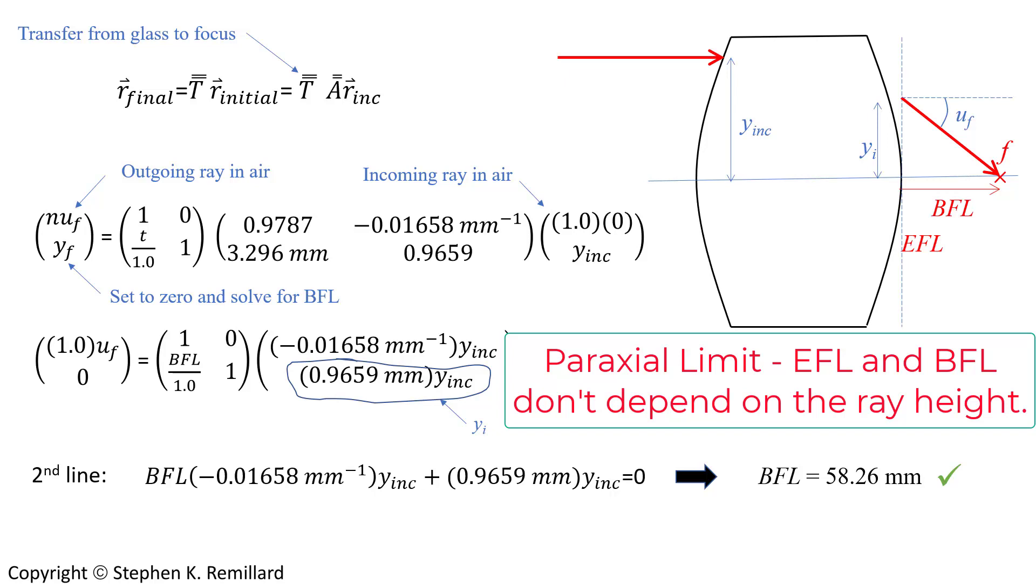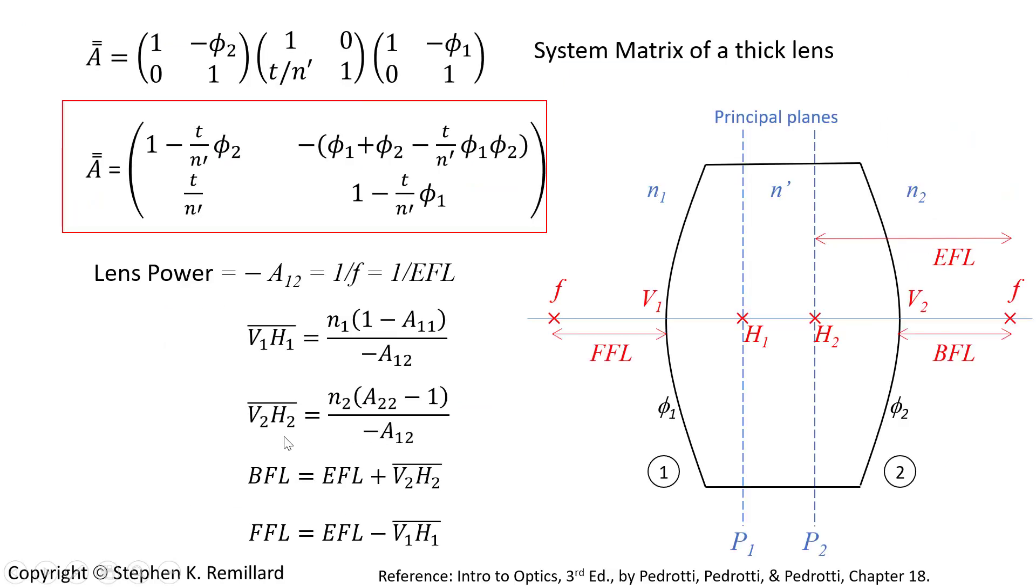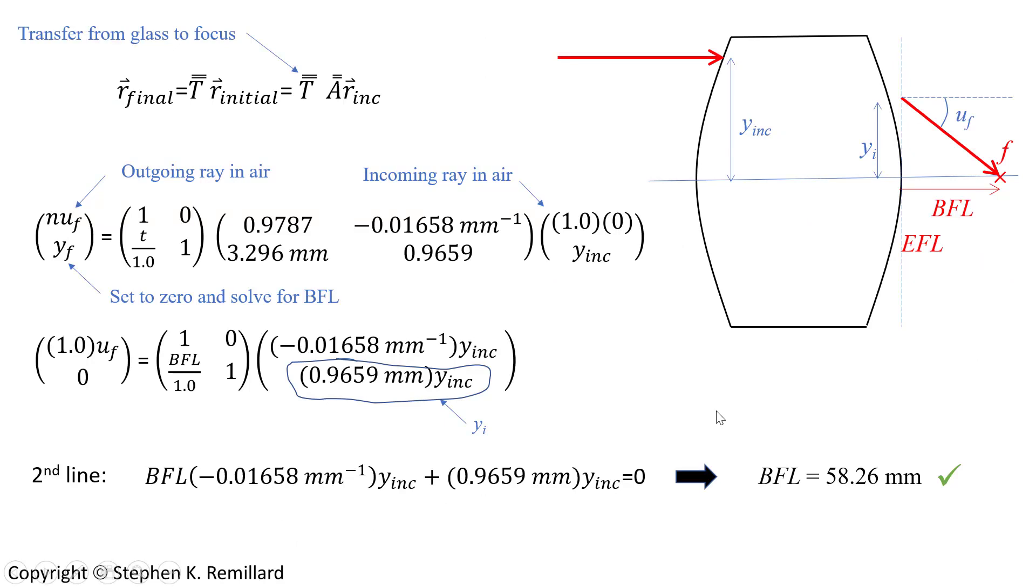And so we solve for it, and we get back focal length of the same thing, 58.26, maybe a little rounding error there. Through self-consistency, we've confirmed that this expression for back focal length, in fact, is correct. Because without a doubt, I believe this brute force determination of back focal length.